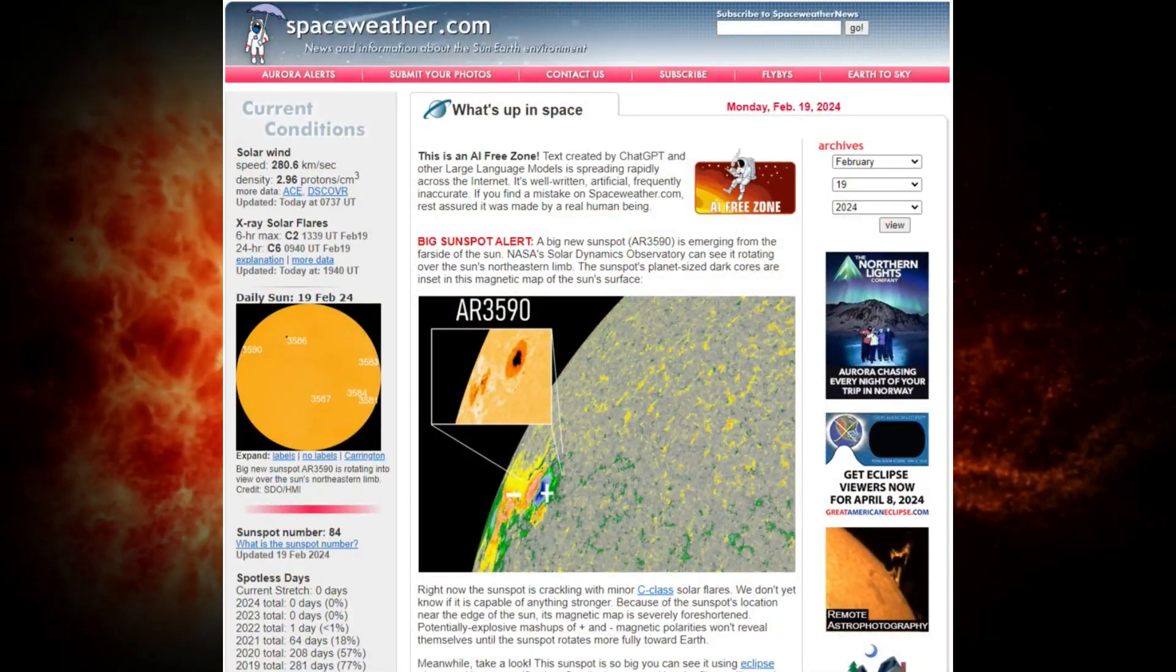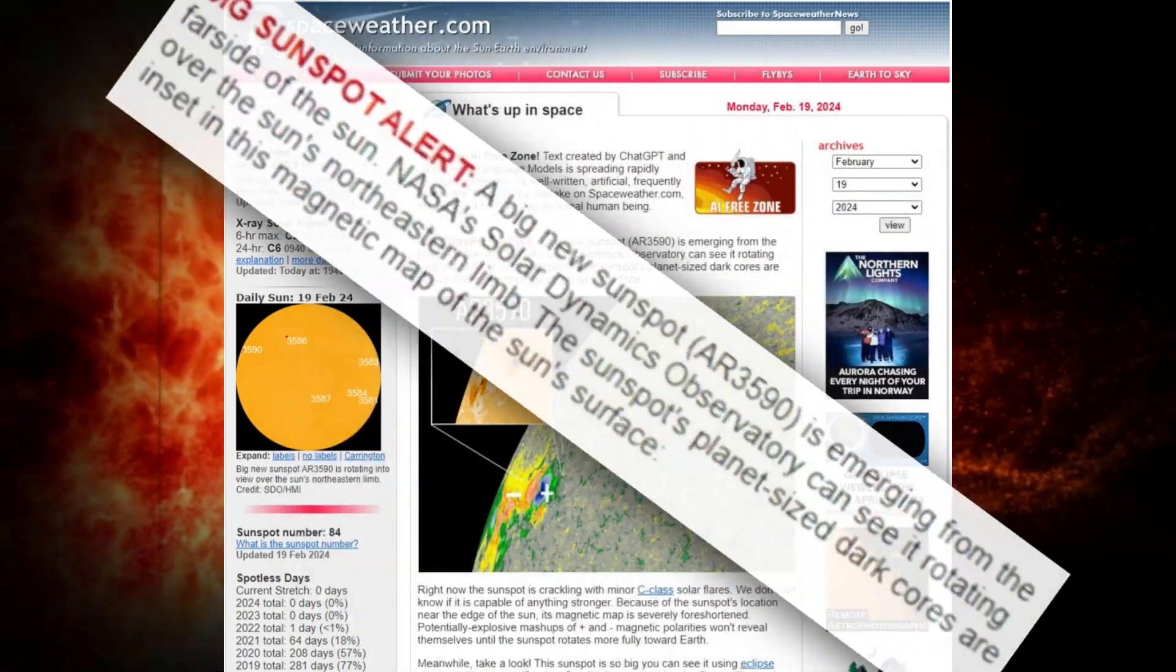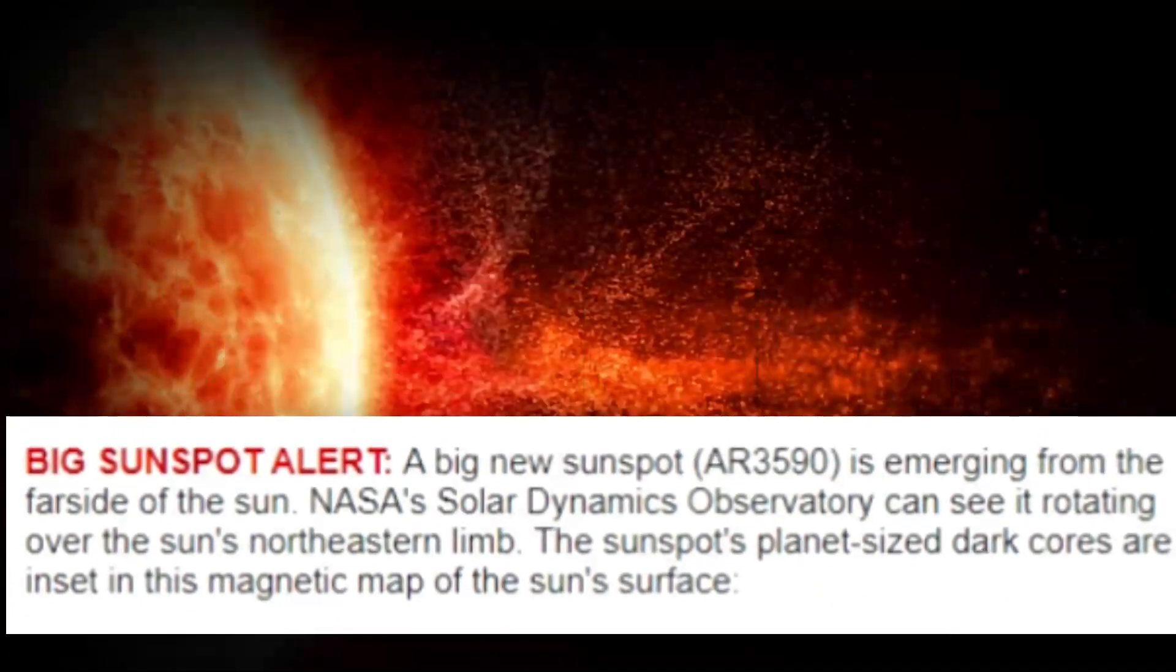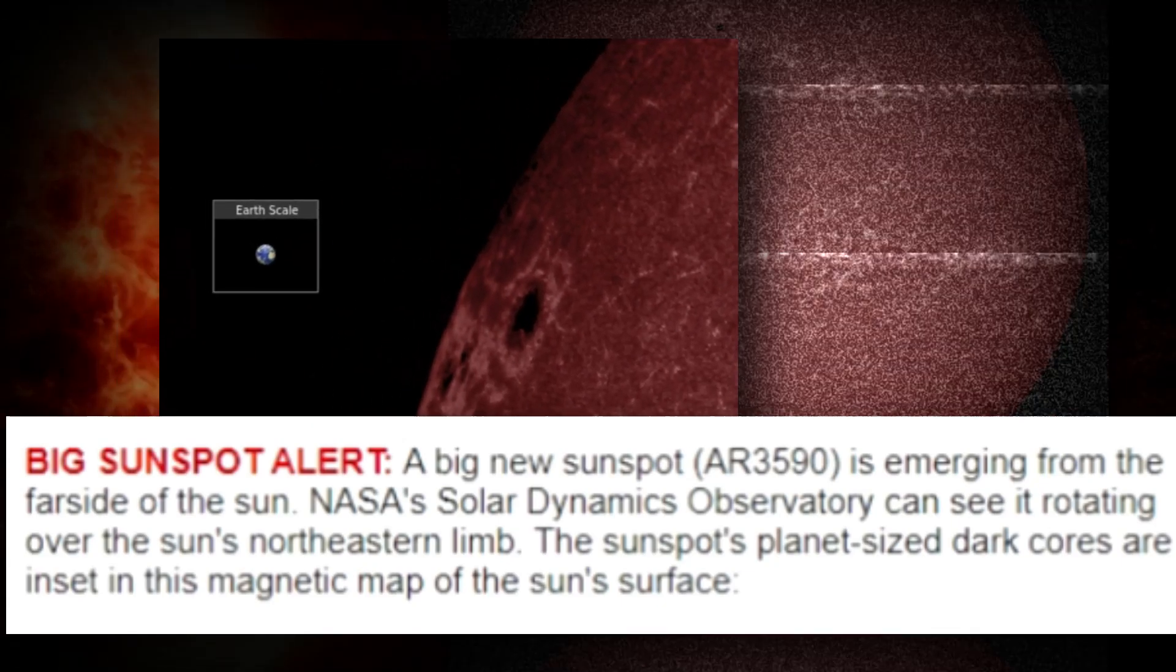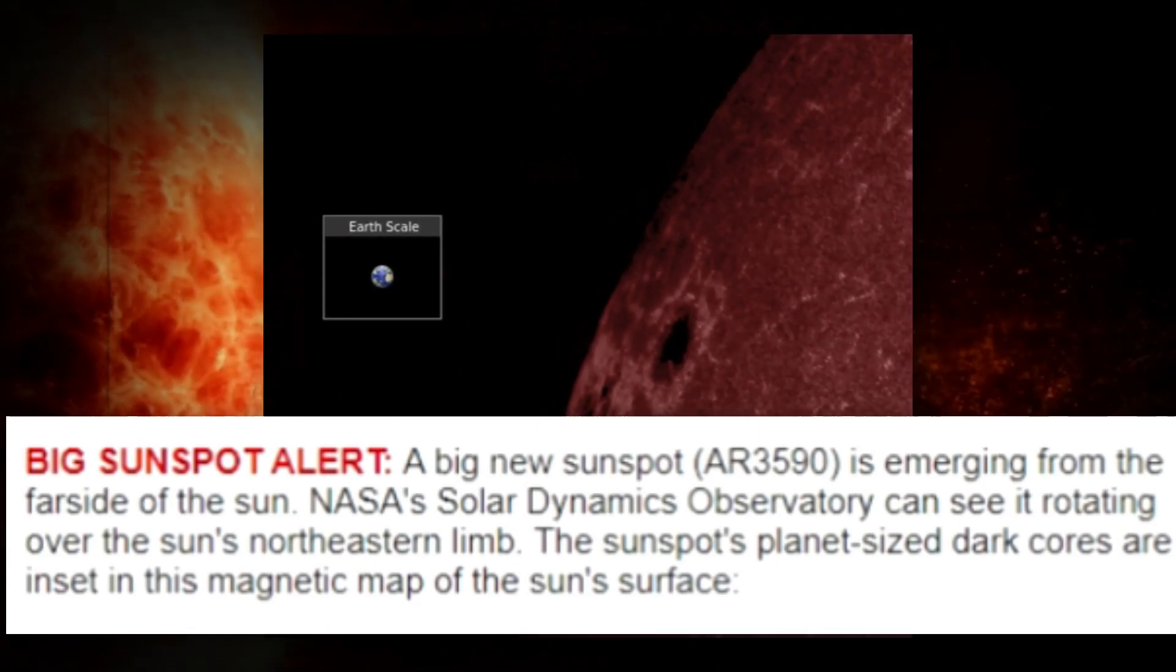As of the posting of this video, space weather sites like spaceweather.com have updates as follows: 'Big sunspot alert - a big new sunspot AR-3590 is emerging from the far side of the sun. NASA's Solar Dynamics Observatory can see it rotating over the sun's northeastern limb.'